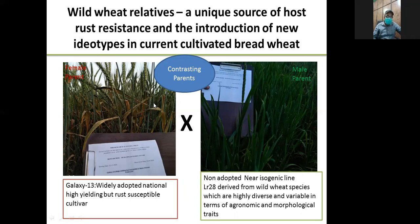But our approach was slightly different from the existing methods. Instead of crossing the best genotypes with the best ones — which is still the widely used and popular approach among breeders — we directly used unadopted near-isogenic lines that were derived from their wild wheat relatives.